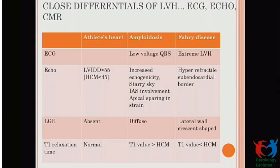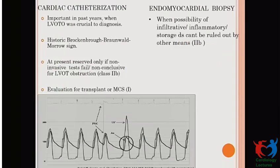ECG, echo, LGE, and T1 relaxation time in CMR can be used to differentiate between infiltrative cardiomyopathies. Cardiac catheterization has a historic role, but now with advanced non-invasive methods its role has become quite limited — however it can be used if non-invasive tests fail to establish LVOT gradient. In transplant-waiting terminal patients it also has a role. The lower panel shows the classic Brockenbrough-Braunwald sign: post-PVC there is a fall in pulse volume and pulse pressure. Endomyocardial biopsy is indicated only if infiltrative, inflammatory, or storage disease is suspected.